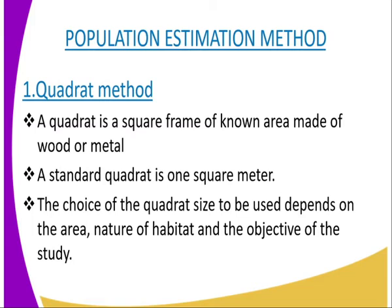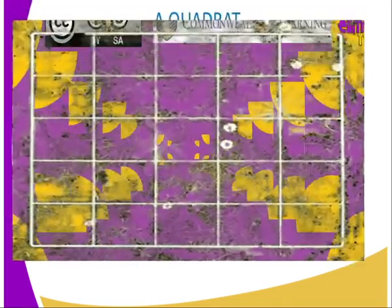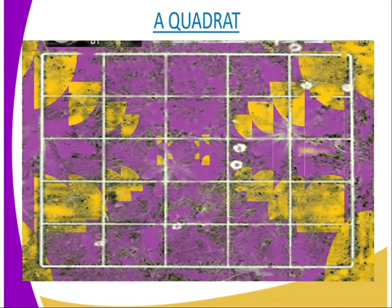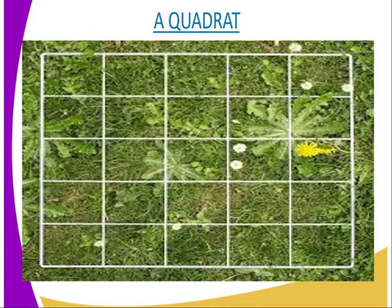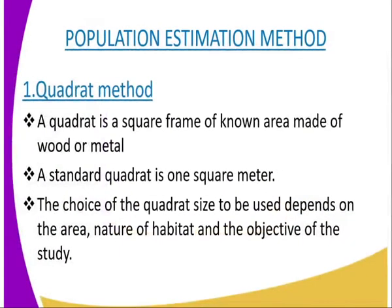Sampling can be carried out using several methods, including the quadrat method, the line transect, the belt transect, and the capture-recapture method. We are now going to look at the quadrat method. A quadrat is a square frame of known area made of wood or metal. The standard quadrat is one square metre, but smaller quadrats can be used if only a small area is being studied. The quadrat can further be subdivided into smaller squares by lengths of string or wire, as shown in the diagram. The choice of quadrat size depends on the area, the nature of the habitat, and the objective of the study. The quadrat method is suitable for small plants like grass and herbs, and small slow-moving animals.